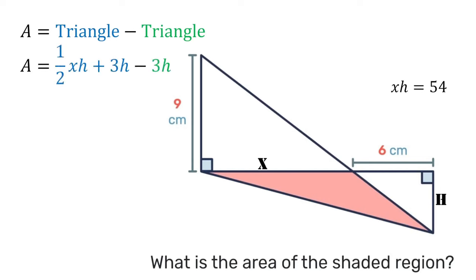So when we subtract the area of the green triangle from the area of the blue triangle, we'll notice that we have 3h minus 3h. Those will cancel out, and we're left with just half xh.